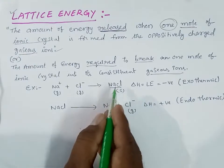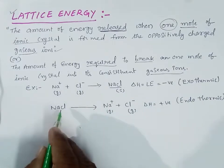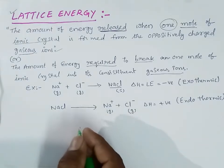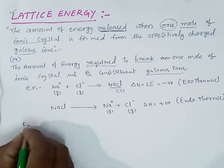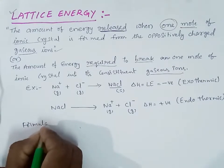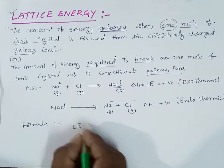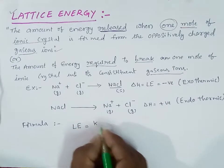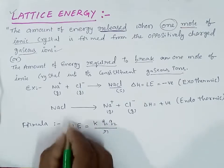So lattice energy is the energy released in the formation of ionic crystals, or the energy required to break one mole of ionic crystal into its constituent charged ions. We have a formula to calculate lattice energy: lattice energy equals k times q1 times q2 divided by r.